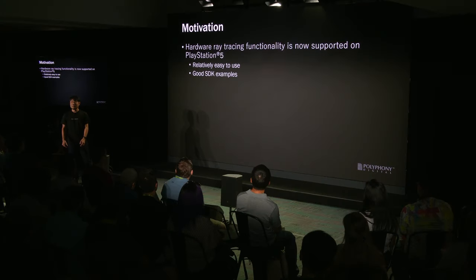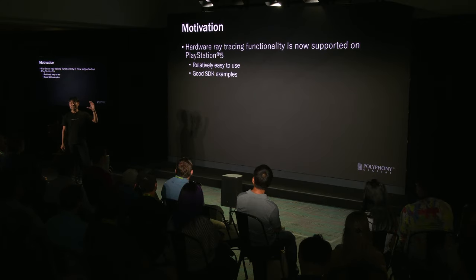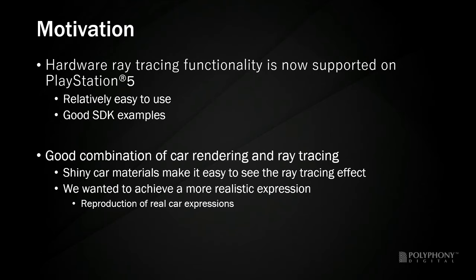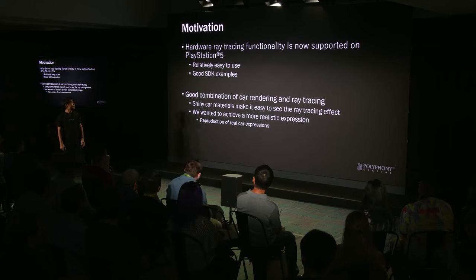Next, we discussed hardware ray tracing support. The reason for hardware ray tracing support is, of course, the hardware ray tracing support in PlayStation 5. As hardware, it provides only basic functionality; however, it is well supported in the SDK and provides an easy-to-use environment. The samples are also extensive and provide many hints on how to use them. The effect of accurate reflections, which is one of the strengths of ray tracing, is especially easy to see on shiny materials like car paint. In addition, real cars are designed to include reflections, so it was necessary to support accurate reflections to accurately reproduce the real car.